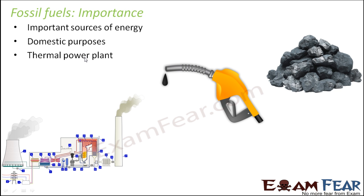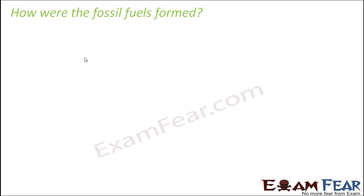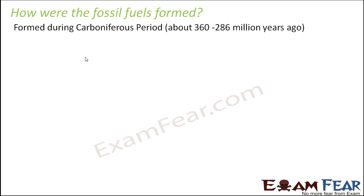In a thermal power plant, the heat energy from fossil fuels is used to generate electricity — that is the purpose of setting up a thermal power plant. Now, these fossil fuels were formed during the Carboniferous period, which was a long time ago, around 350 million years ago.